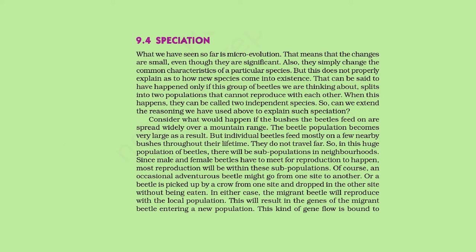9.4 Speciation. What we have seen so far is microevolution — small but significant changes that simply alter the common characteristics of a particular species. This does not properly explain how new species come into existence. That can be said to have happened only if a group of beetles splits into two populations that cannot reproduce with each other — when this happens, they can be called two independent species. Can we extend our reasoning to explain such speciation?